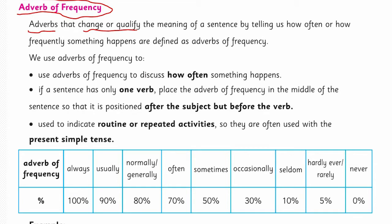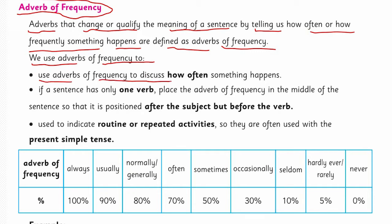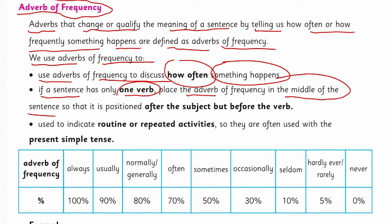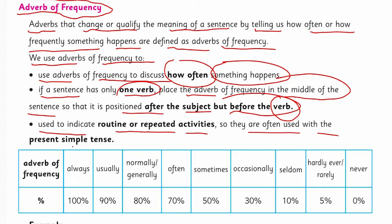Adverbs that change or qualify the meaning of a sentence by telling us how often or how frequently something happens are defined as adverbs of frequency. We use adverbs of frequency to discuss how often an action is done. If a sentence has only one verb, place the adverb of frequency in the middle of the sentence so that it is positioned after the subject but before the verb. They are used to indicate repeated activities, so they are often used with the present simple tense.